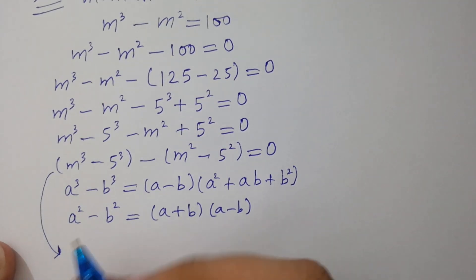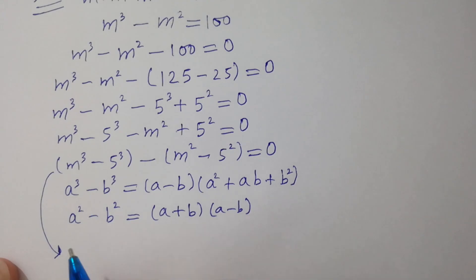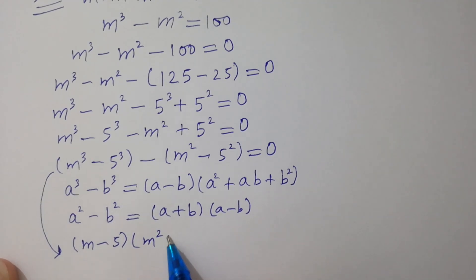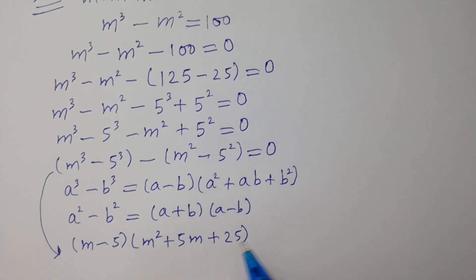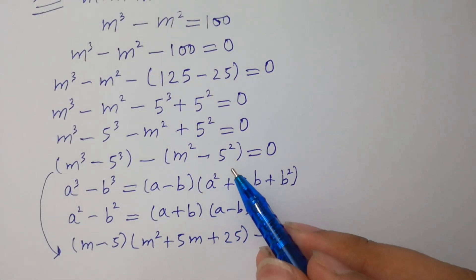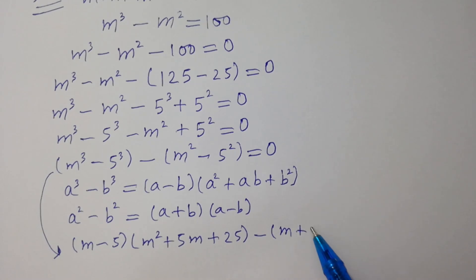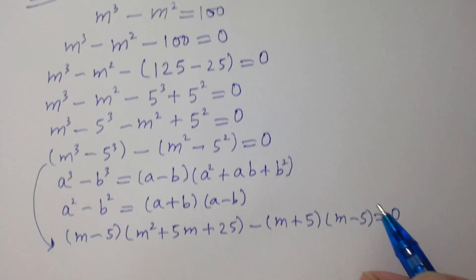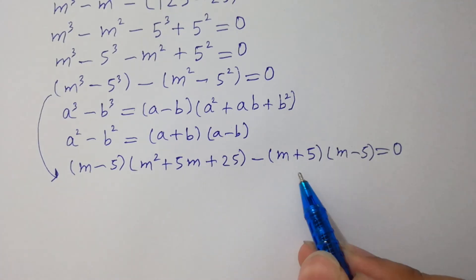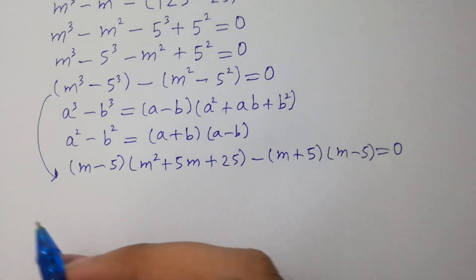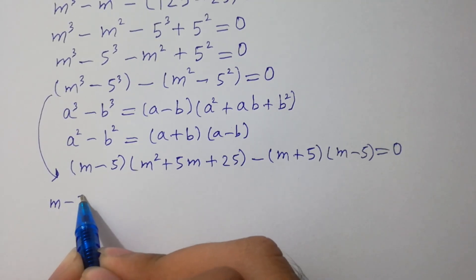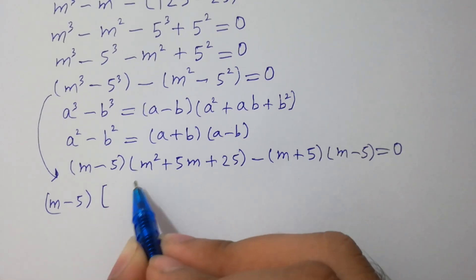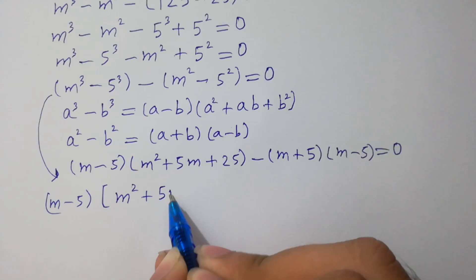This equation converts into (M minus 5)(M squared plus 5M plus 25) minus (M squared minus 5 squared), which is (M plus 5)(M minus 5) equals zero. Since (M minus 5) is common, we factor it out.